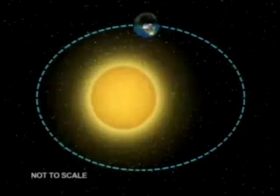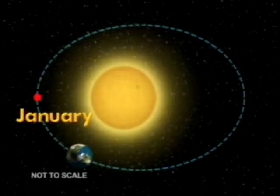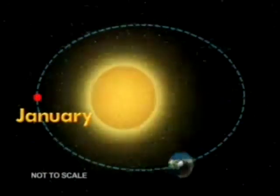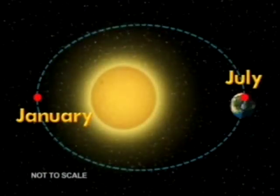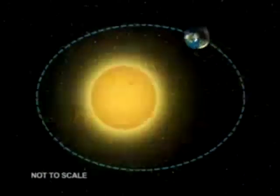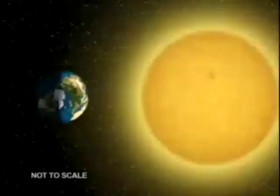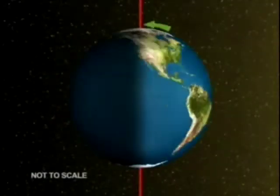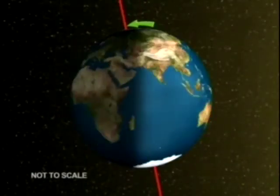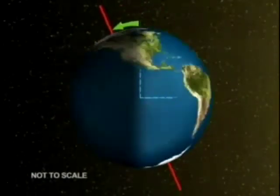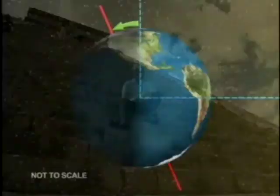The surprising fact is that the distance from the Earth to the sun has absolutely nothing to do with the changing seasons. Our northern hemisphere is closest to the sun in January and farthest from the sun in July. So what is causing the change in temperature? Earth's axis is tilted by 23.5 degrees from a line perpendicular to Earth's orbit.